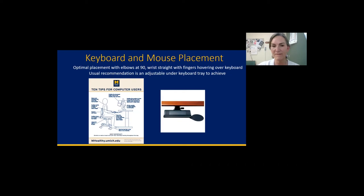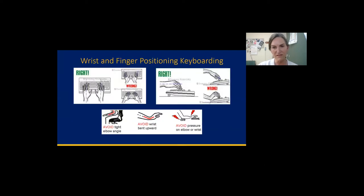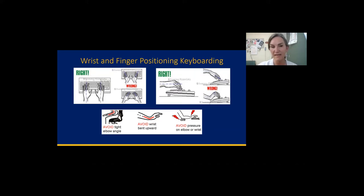If you don't have a keyboard tray, you can use laptop trays that sit on your lap. Optimally you don't want the keyboard up on the desk unless your elbows are at 90 degrees and your wrists can be straight. This is a good picture showing some of the do's and don'ts of wrist and finger positioning when keyboarding.